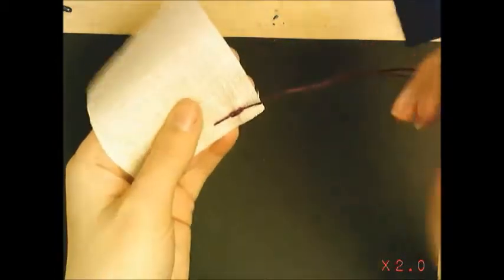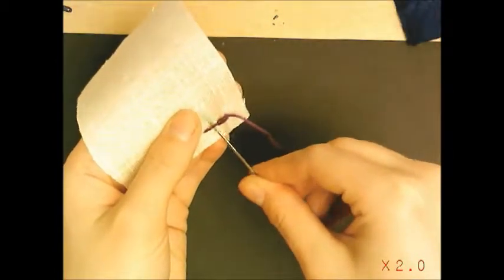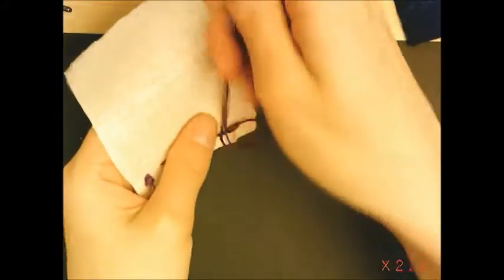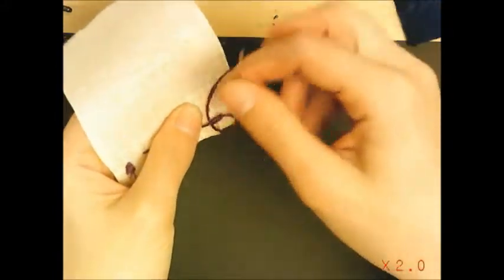And pull. Okay, so that's made a knot but you want to always do it twice. So go through the previous stitch, make that loop, go under and pull. And then the only way you can get this off is using scissors.